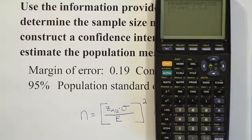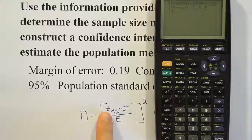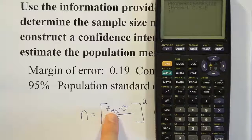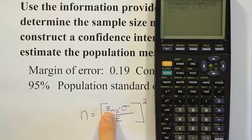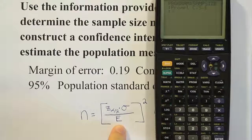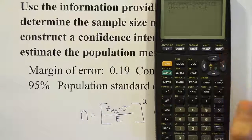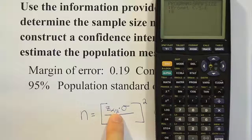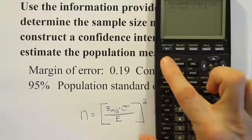That first line will allow me to enter values — the calculator will ask for the confidence level, the standard deviation, and the error. Now, what we actually need is z_α/2, not the confidence level directly. So I'm going to have the calculator compute z_α/2 from the confidence level C behind the scenes, and at the end display my answer.